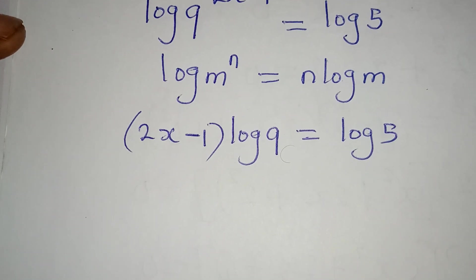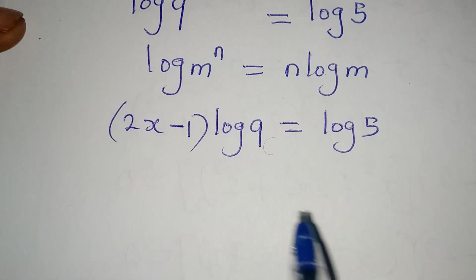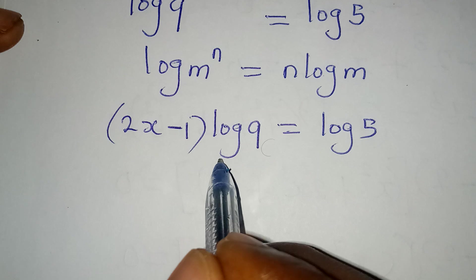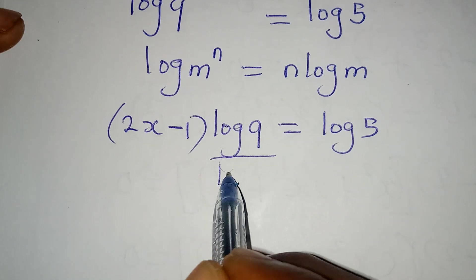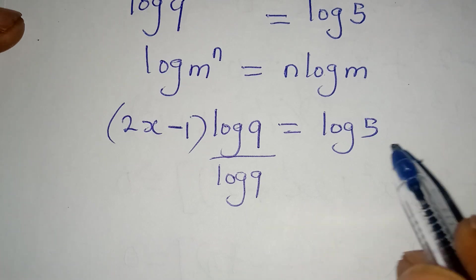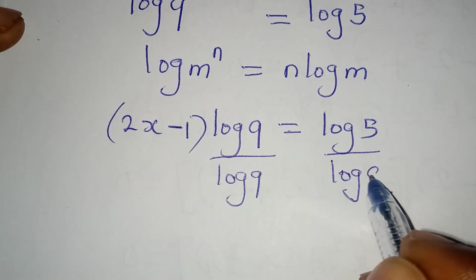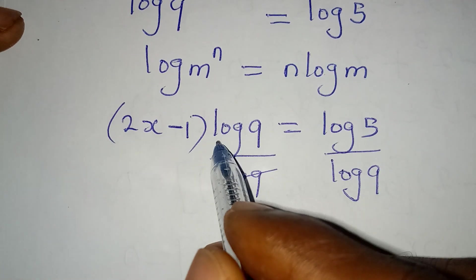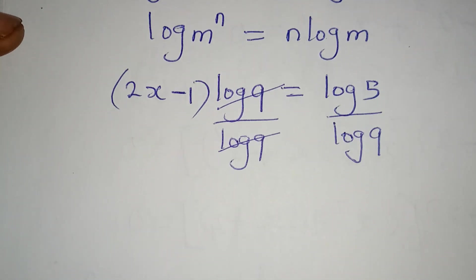And now what do I do next? I have to eliminate log 9 from the left hand side, so I will divide the left by log 9, then divide the right by the same log 9, so that this can cancel.